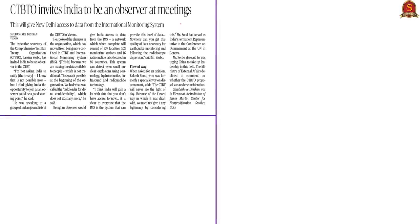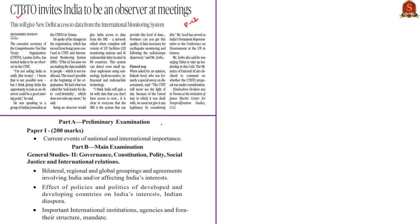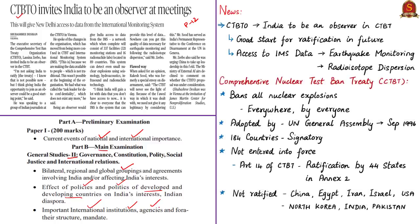This article is about the Comprehensive Test Ban Treaty and has appeared on page 12 in all editions. It will be relevant in prelims under current events of national and international importance, in mains under GS2 in global groupings and agreements involving India, effects of policies of developed and developing countries on India's interests, and international institutions and agencies. The article talks about the CTBTO inviting India to be an observer in the Comprehensive Nuclear Test Ban Treaty.